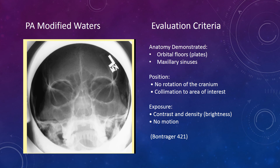In the final image, the orbital floor should have a less distorted view of the orbital rims than in the Waters projection. Petrous ridges should be in the lower one-half of the maxillary sinuses, and no rotation should be evident by measuring the distance from lateral orbital margins to the mid-sagittal plane and lateral aspect of the skull. Contrast and density should be sufficient to show the orbital floors, and sharp bony margins should indicate no motion.